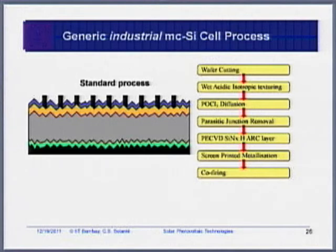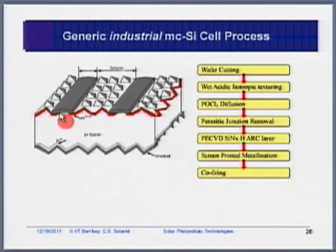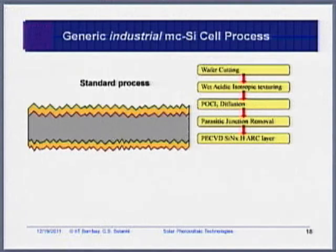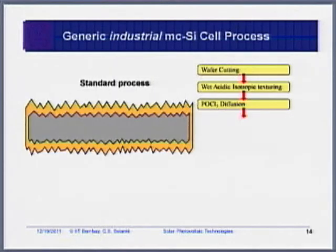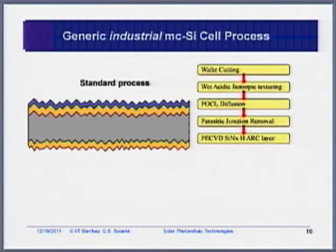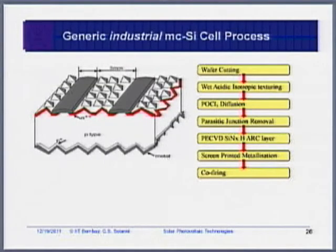This is the typical solar cell process in industry. You end up with a textured back side, P-plus at the back (very thin), thick P in the middle, N-plus at the top, and metal fingers with aspect ratio less than 1 (width higher than height), with typical spacing of 1–3 mm. If you do this process well, you can very easily get a solar cell of about 15–16% efficiency.